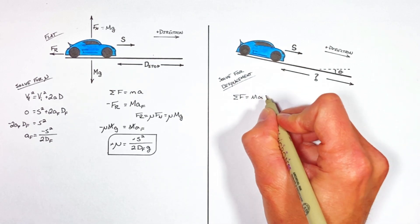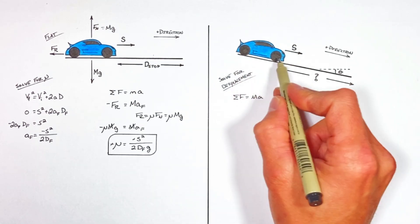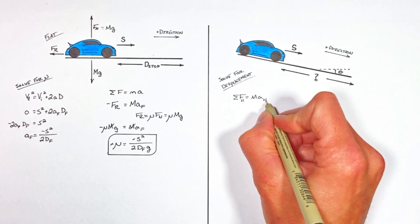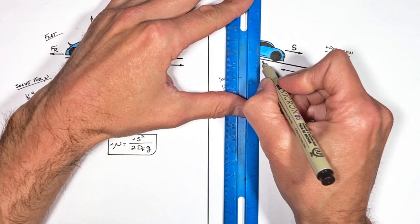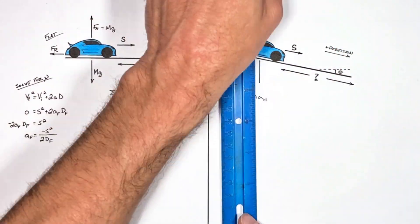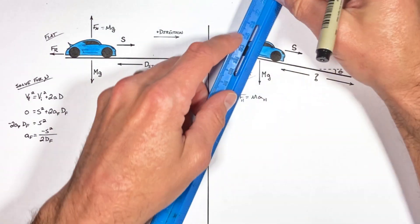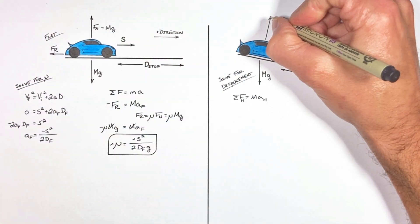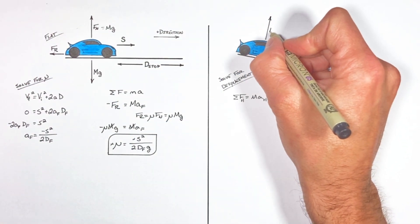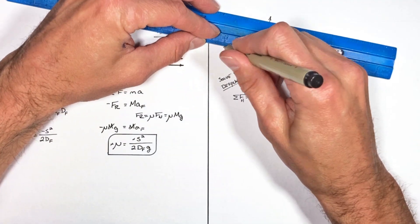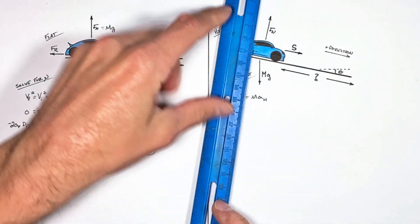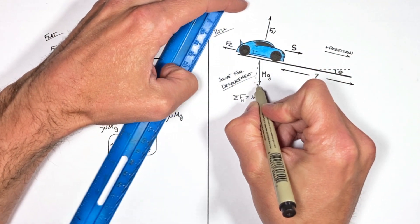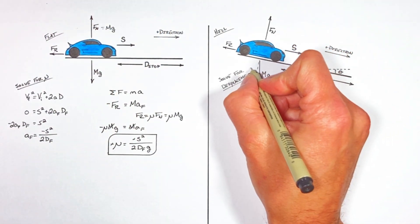We're going to start at Newton's second law, but rather than looking at the motion of the car horizontally or vertically, we're going to look at the motion of the car in the plane of the hill. Let's draw a free body diagram, starting with weight — force by gravity — that's still going to be mg. Then there's the normal force. Because the car is on a hill, the normal force is not going to be equal to the weight of the car. Anytime an object's on a hill, the force of gravity can be broken up into components: the first component perpendicular to the hill, and the second component parallel to the hill.